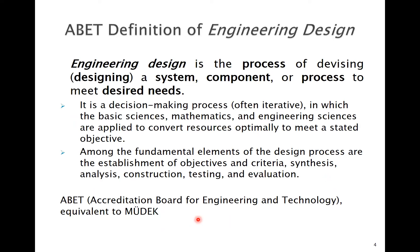How about engineering design? It is the process of designing a system component or process to meet desired needs. As you can see, both in the definition of engineer and engineering design, there must be a need. Engineering design is an iterative, decision-making process, usually implemented iteratively, and we apply basic science, mathematics, and engineering science to optimally convert resources to meet a stated objective, which is just about the desired need.